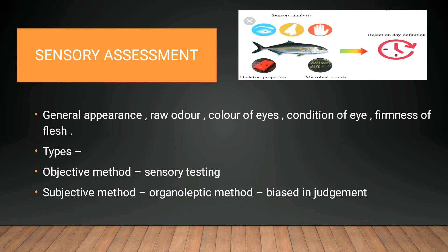By seeing, touching, and smelling, we can detect the kind of spoilage. So we can detect whether the food is suitable for us or not. The general appearance, the raw odor, the color and condition of eyes, and firmness of fish can be detected by sensory analysis, and we can reject or accept the fish based on it.